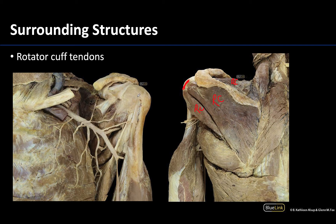Here you can see this anteriorly placed rotator cuff muscle, and its tendon gets lost right about here because it becomes intermingled with the joint capsule of the shoulder joint. You can really see how that tendon is crossing over this region, intermingling with the capsule, providing that strong protection in this region.